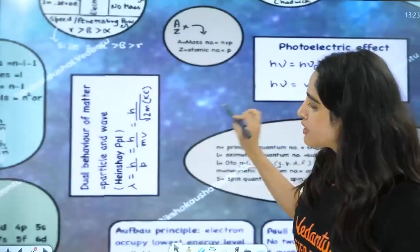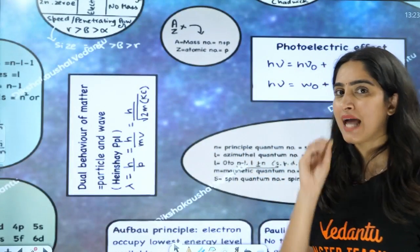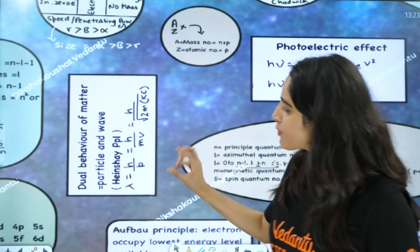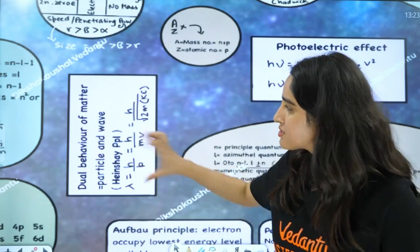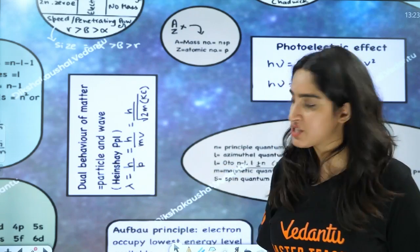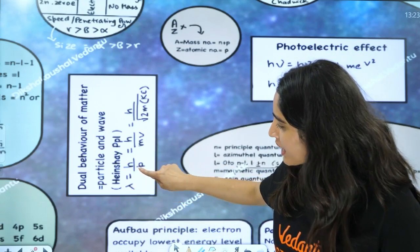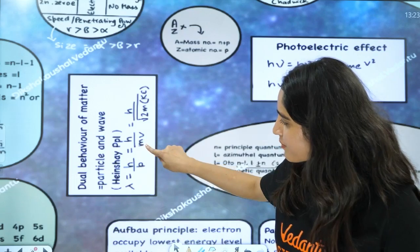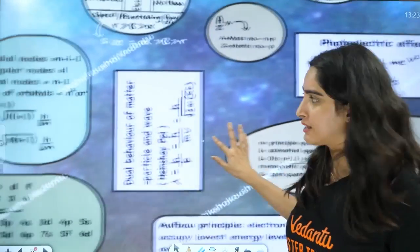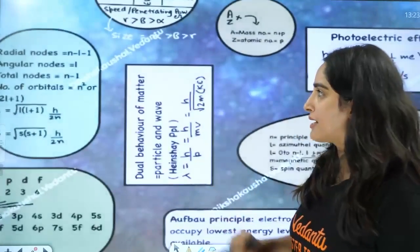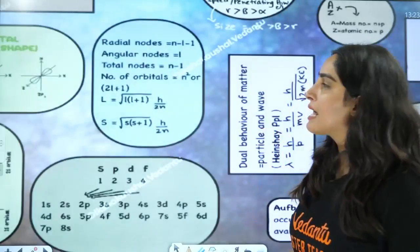This is the dual behavior of matter, for which we have de Broglie's equation: λ = h/p = h/mv = h/√(2mKE). This is de Broglie's equation.